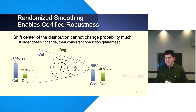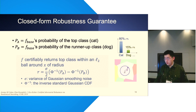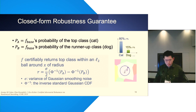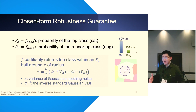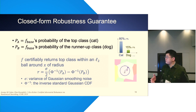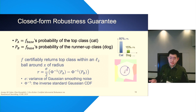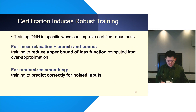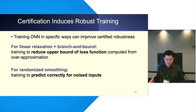For randomized smoothing, we can even have a closed-form formula to compute the certified radius of robustness. To compute it, we only need to query some statistics like the top class probability, the runner-up class probability, and the noise variance.